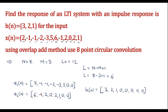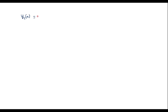Now we have to perform circular convolution between x1(n) and h(n), then x2(n) and h(n). Let me calculate the first circular convolution y1(n) = x1(n) ⊛ h(n). Here N is equal to 8, so let me compute the circular convolution using the matrix method. It is N = 8, so we have 8 samples: y1(0), y1(1), ..., y1(7).